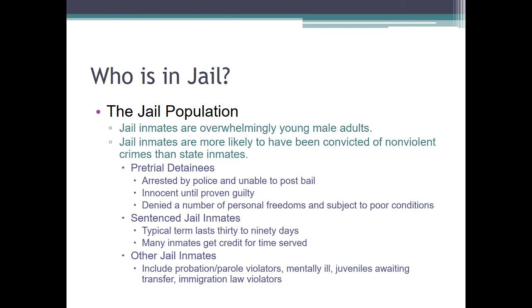Who's in jail? Jail populations are overwhelmingly young, overwhelmingly male, and overwhelmingly adults. They also tend to have more people convicted of nonviolent crimes — for example, a simple possession charge with no distribution and not a large amount. You also have pre-trial detainees: people who have been arrested but aren't able to post bail, so they stay there until trial. Most misdemeanors are served in days — 30, 60, or 90 days is very common. Other jail inmates include probation and parole violators, mentally ill, juveniles, and immigration law violators.